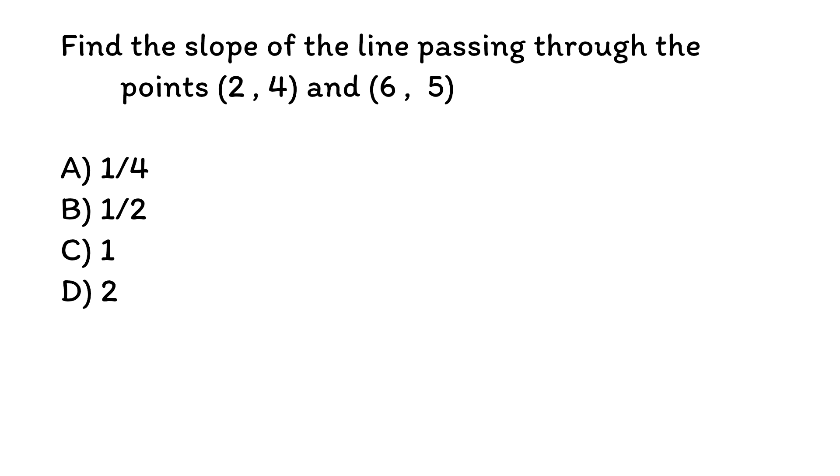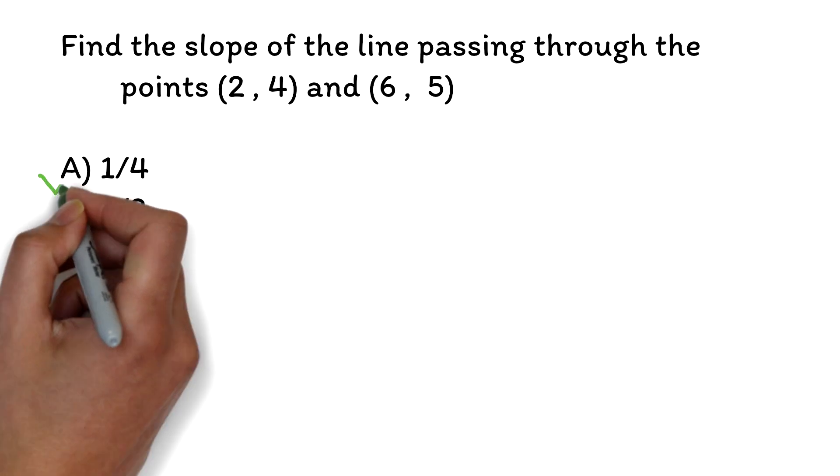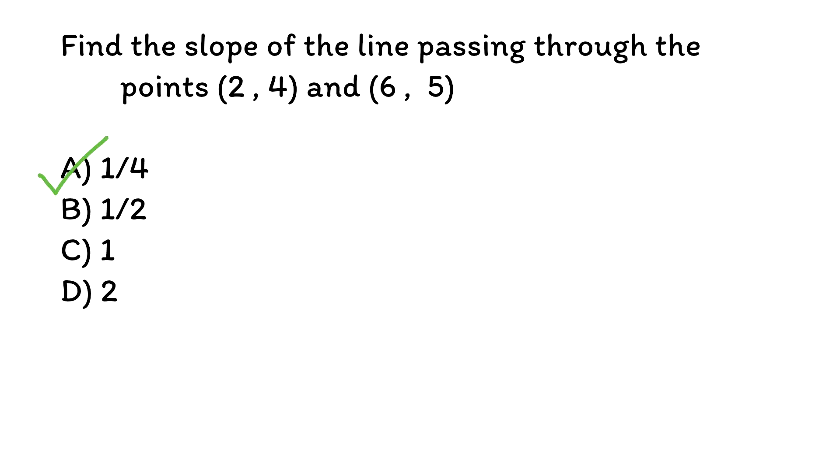Find the slope of the line passing through the points 2, 4 and 6, 5. A. 1 over 4, B. 1 over 2, C. 1, D. 2. The correct answer is A, 1 over 4. To find the slope of a line given 2 points, we will use the slope formula.